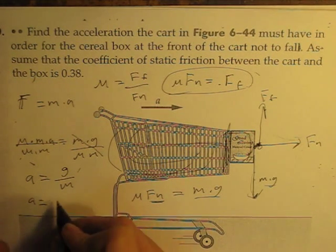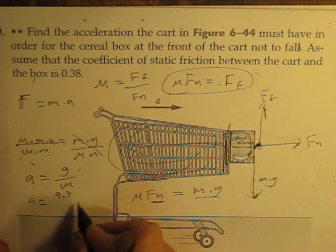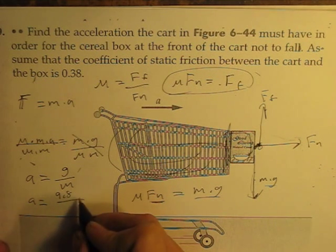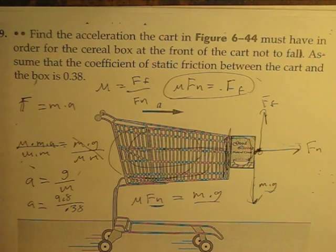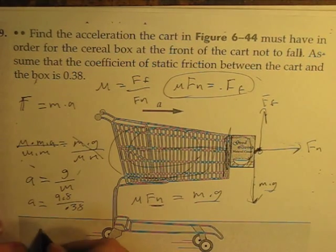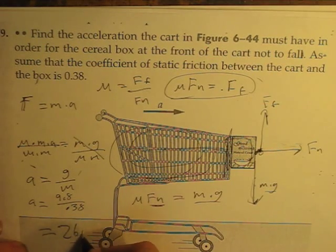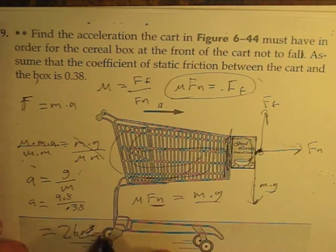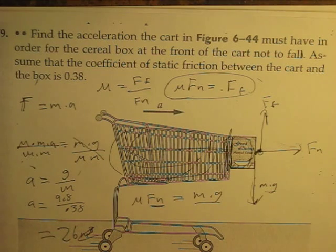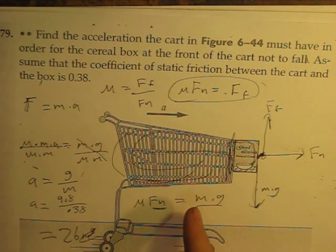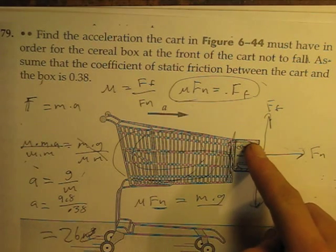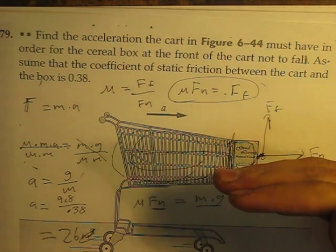And so acceleration equals 9.8 meters per second squared divided by 0.38 which has no label. And that's just going to equal 26 meters per second squared. So the acceleration of this cart has to be 26 meters per second squared to keep this cereal box right here in one place.